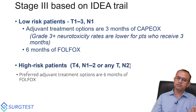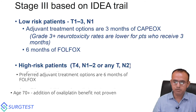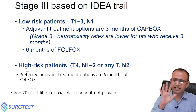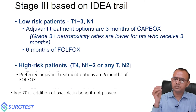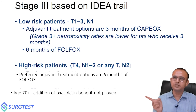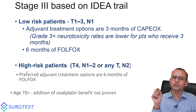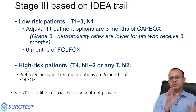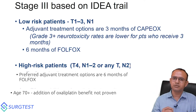For high-risk patients — T4 or N2 disease — it is preferred to give six months of FOLFOX. In patients aged 70 and above, the added benefit of oxaliplatin is not proven and should be avoided. So in stage three low-risk disease (T1/T2/T3 or N1), three months of CAPOX is sufficient. In high-risk stage three (T4 or N2), six months of FOLFOX is recommended.